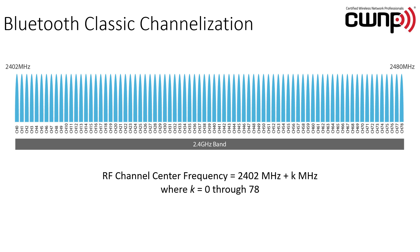The channels have 1 megahertz spacing and are 1 megahertz wide. Bluetooth uses frequency hopping across these channels — it will develop a pattern of channels to hop across during communications. It will hop to a channel, dwell there to communicate for a while, hop to another channel, dwell there, and so forth.